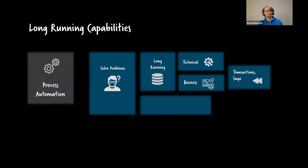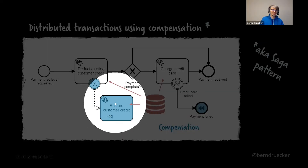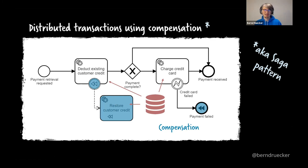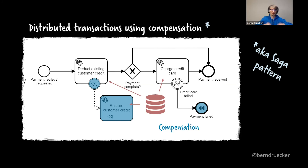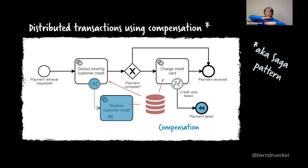A workflow engine can handle that, and long-running kicks in again — for example, if restoring customer credit fails because the REST API is unavailable, you have to wait for it to come back. There was a quick question: what if the rewind fails? Either you model for it if it's a common scenario, or if it doesn't work you raise an incident — flag a problem in the operations tool — and an operator looks at the instance, sees the context, and repairs it. At some point you have to stop modeling everything, otherwise it becomes a mess.